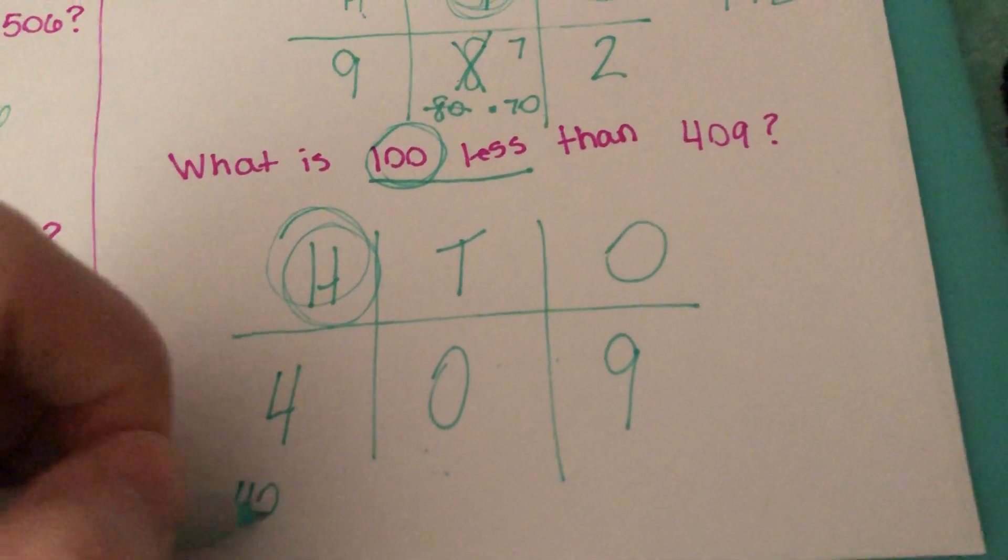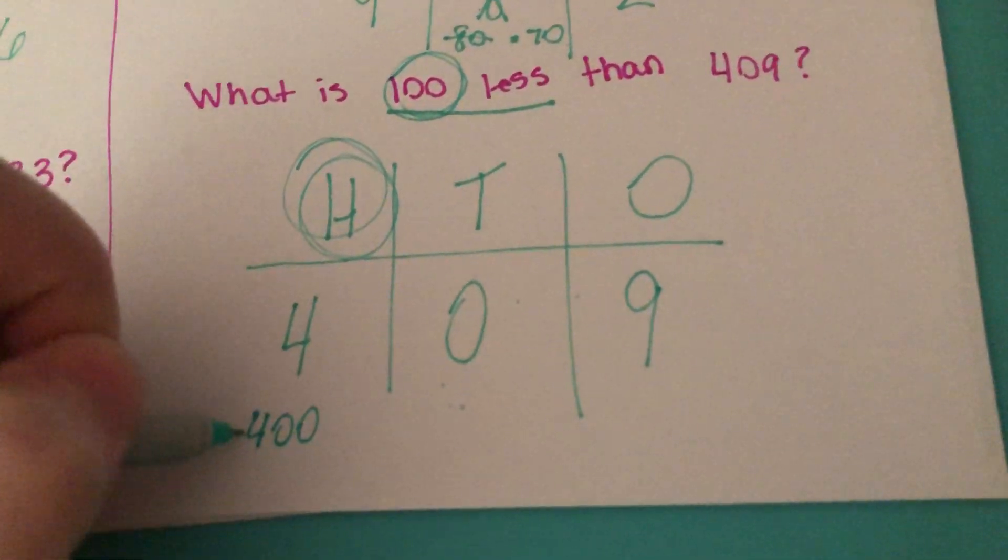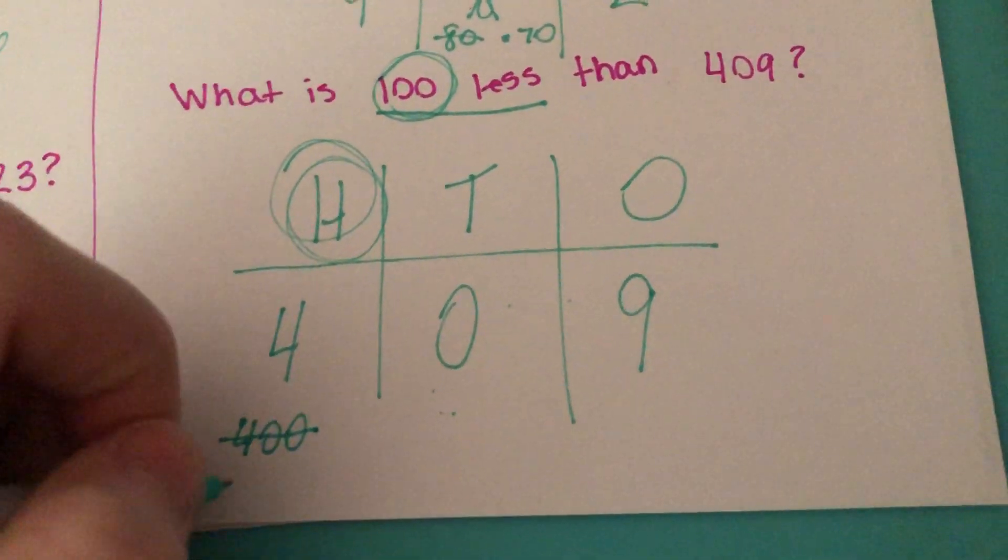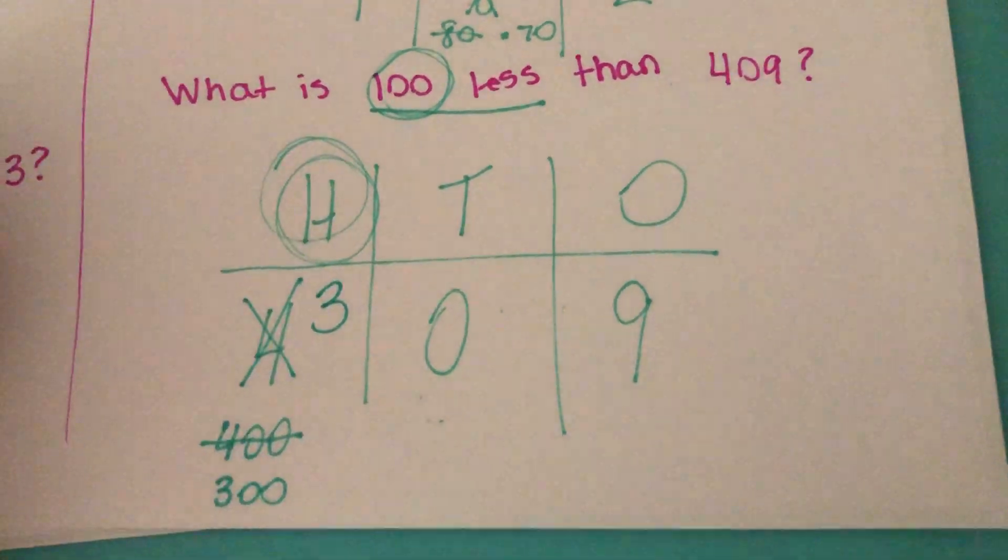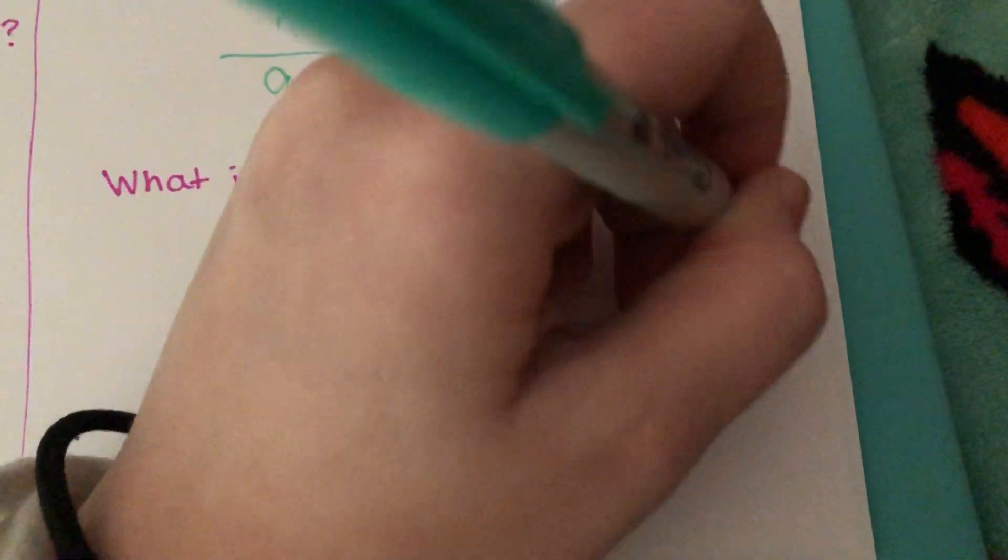Well, we know the value of that 4 is really 400. We know that 100 less than 400 is 300. So instead of this being a 4, it's going to be a 3, making this answer 309.